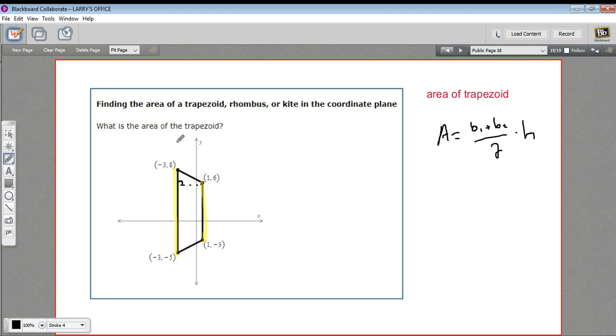So let's get some numbers here. The length of this base, the y-coordinates go from 8 to negative 5. So that's 13. This one, the y-coordinates go from 6 to negative 3. So that's 9. And our height here is going to be the difference in the x-coordinates. So 1 and negative 3, that's 4. So now we've got all the numbers we need.